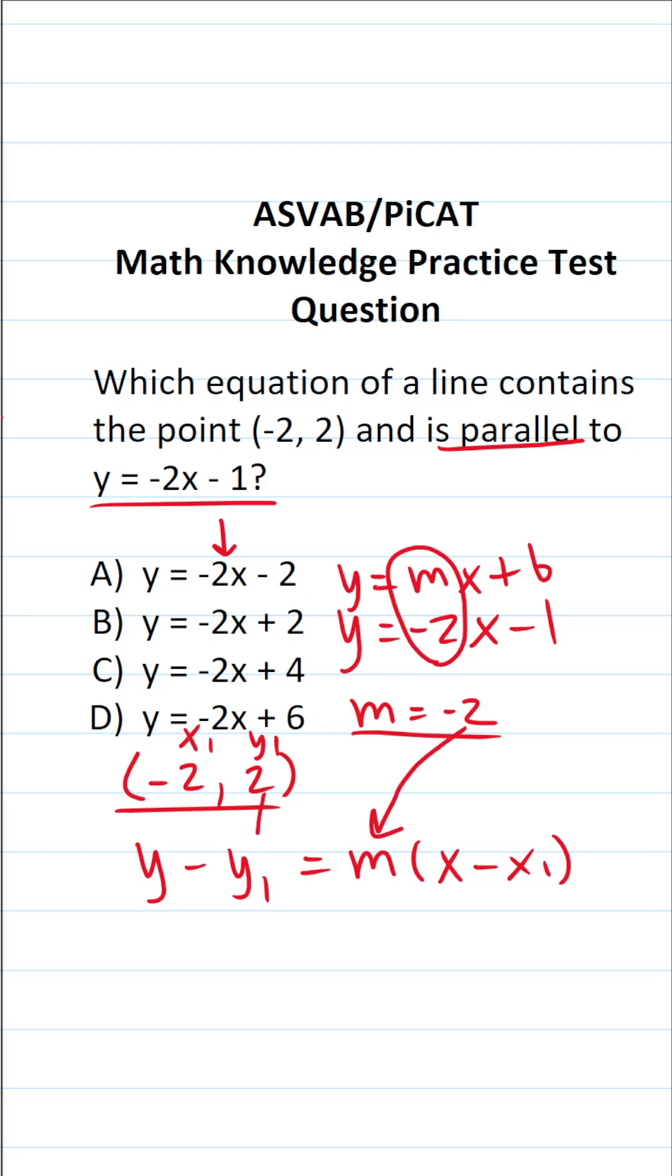What is y₁? It's right here. It's 2. What is x₁? It's negative 2. So let's go ahead and plug those in. This becomes y minus 2 equals negative 2 times x minus x₁ is negative 2.